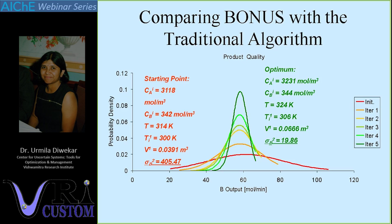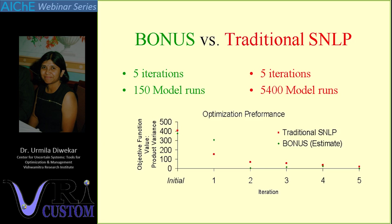Regarding computational performance: with BONUS we needed 150 model runs, while traditional stochastic NLP required 5400 model runs — an order of magnitude reduction in computational time. Following the iterations, the red points are traditional SNLP and the green points are BONUS. Both give essentially the same solution but with a large-scale reduction in computational time. This is fine for small-scale problems, but for large-scale problems this reduction becomes critical.